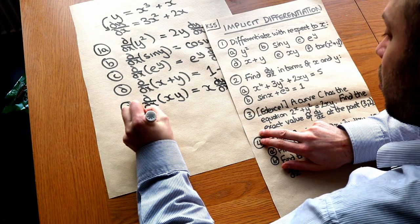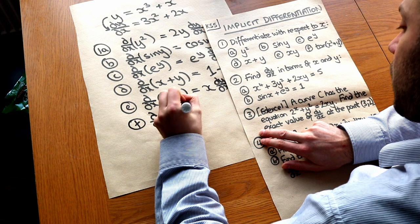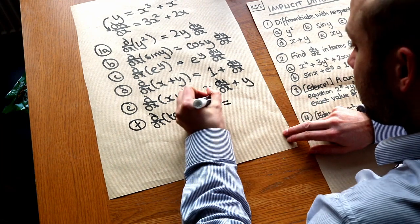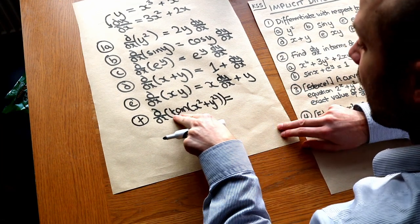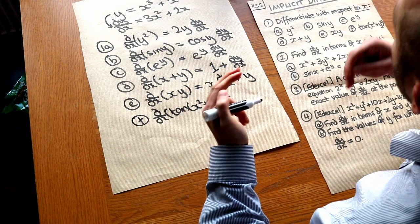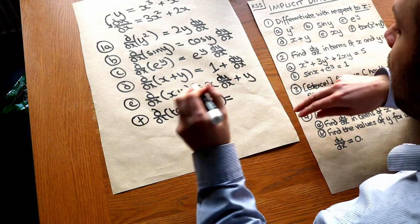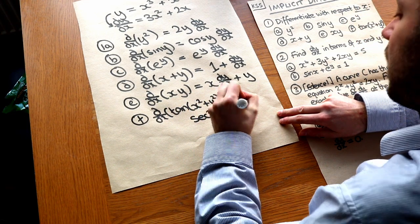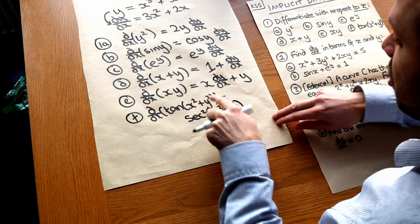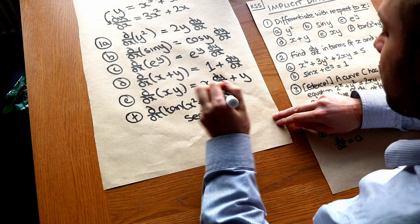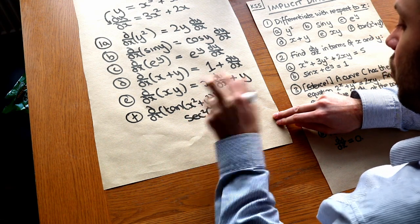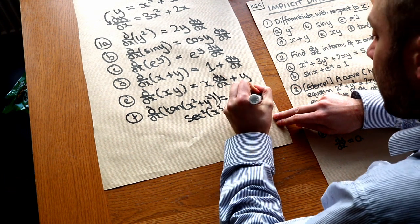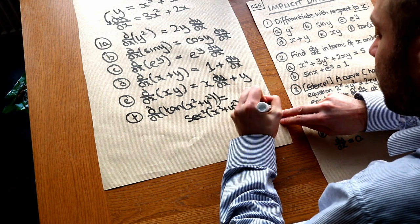Now for the next one, we want to differentiate tan of x squared plus y squared with respect to x. We have to use the chain rule here. The outer function is tan of something — tan of blah differentiates to sec squared blah. Then we multiply by that inner function differentiated. Well, x squared plus y squared differentiates to 2x plus — now this is a function of y — 2y, but we have to slap that dy over dx on the end.